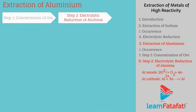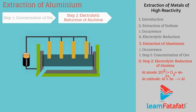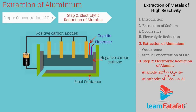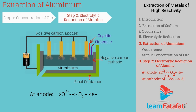Step 2: Electrolytic reduction of alumina. Alumina reaches its molten state when heated above 2000°C. To reduce its melting point, cryolite and fluorspar are added. Molten alumina is fed to a steel tank lined inside with carbon, which acts as the cathode. A set of carbon rods dipped in the molten alumina acts as the anode. During electrolysis, oxygen is liberated at the anode and aluminium is formed at the cathode. At anode: 2O²⁻ → O₂ + 4e⁻. At cathode: Al³⁺ + 3e⁻ → Al.